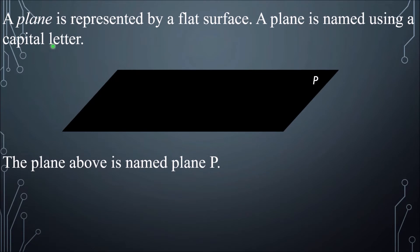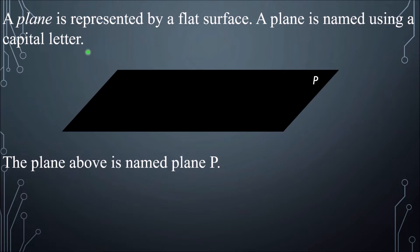Next we have a plane, which is also an undefined term. A plane is represented by a flat surface and is named using a capital letter. The plane shown is named plane B. A plane cannot be defined — you can only represent, describe, and name it, but you cannot define it. That's why it is called an undefined term.